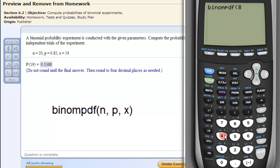and then the number of successes. So 20, comma, .85, comma, 19. Hit enter, and that gives you the probability of 19 successes with an 85% chance of success happening.